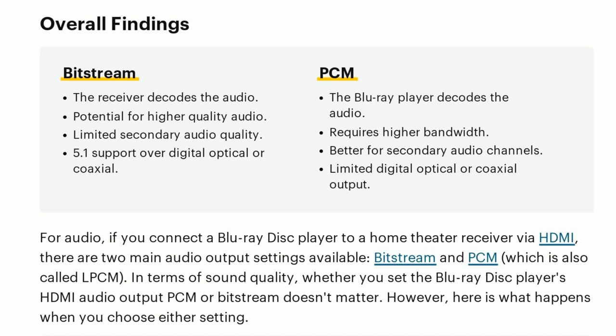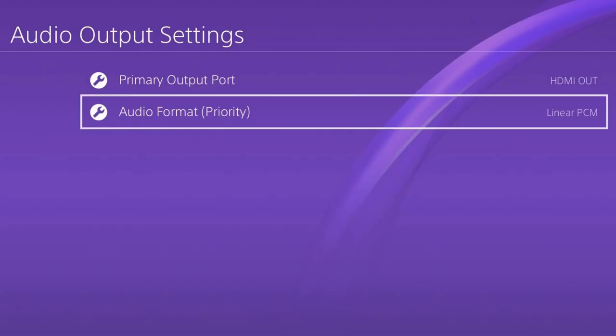So our overall findings: Bitstream — the receiver decodes the audio, with potential for higher quality audio, though limited secondary audio quality. You get 5.1 over digital optical or coaxial. With PCM over a laser optical or coaxial cable, you will get downscaled audio — so don't use those cable types. Use an HDMI connection. PCM has the Blu-ray player decode the audio, requires higher bandwidth, and is better for secondary audio channels like commentary — but it has limited digital optical or coaxial output, so don't use those cable types with PCM either.